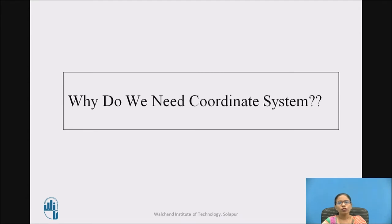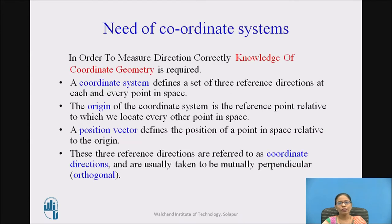Now the question is, why do we need the coordinate system at all? The answer is: in order to measure direction properly, the knowledge of coordinate system — or coordinate geometry — is required.